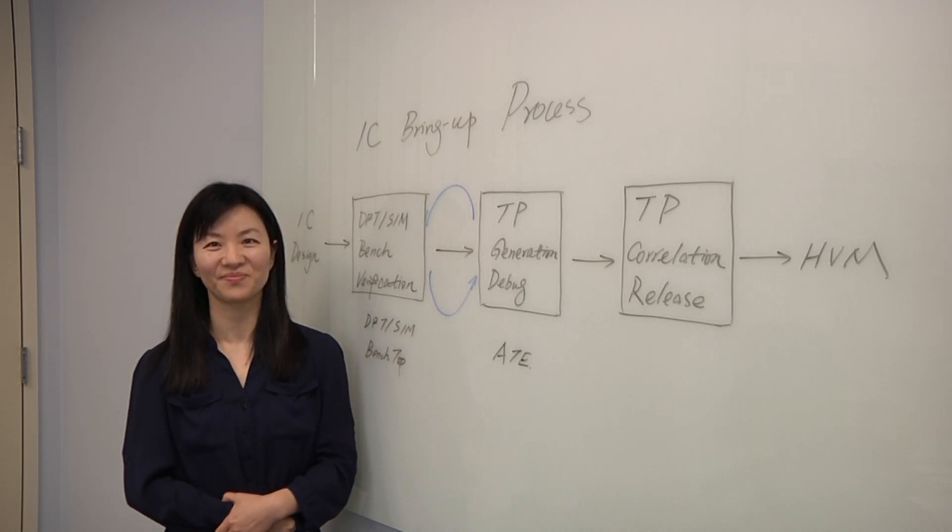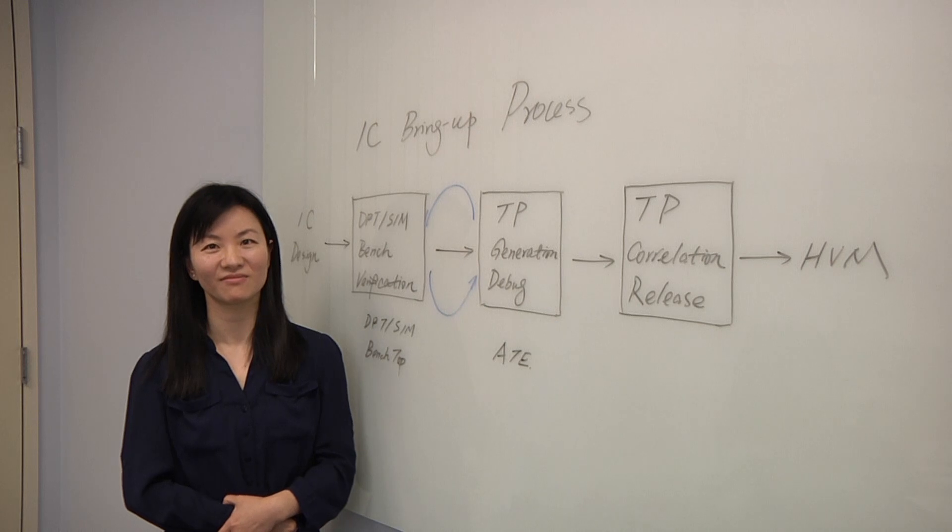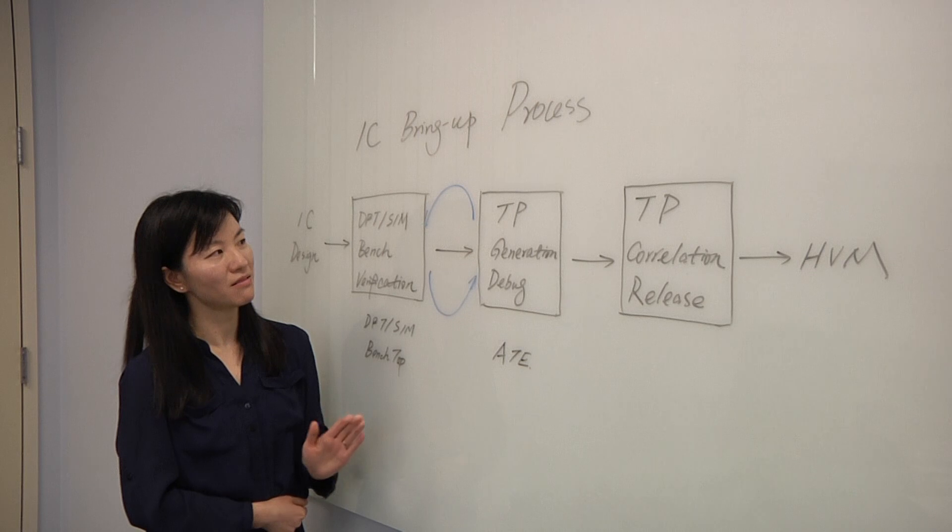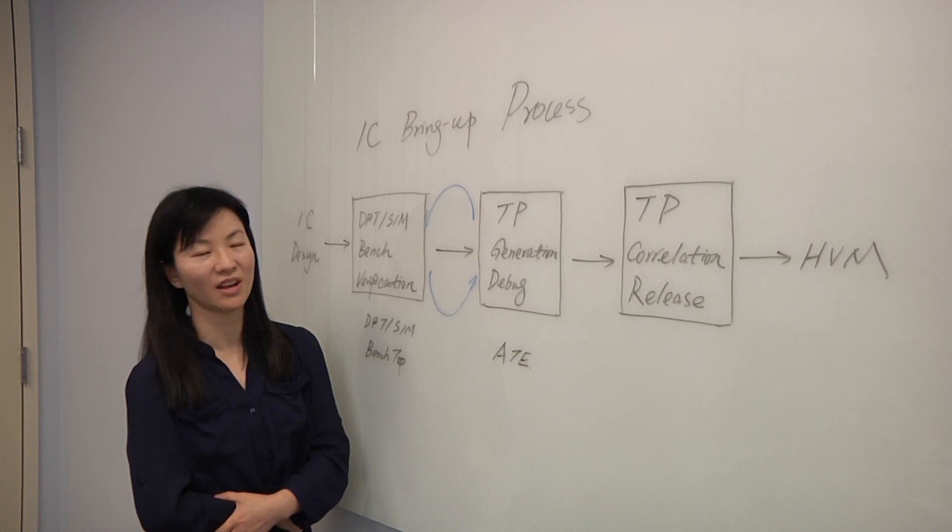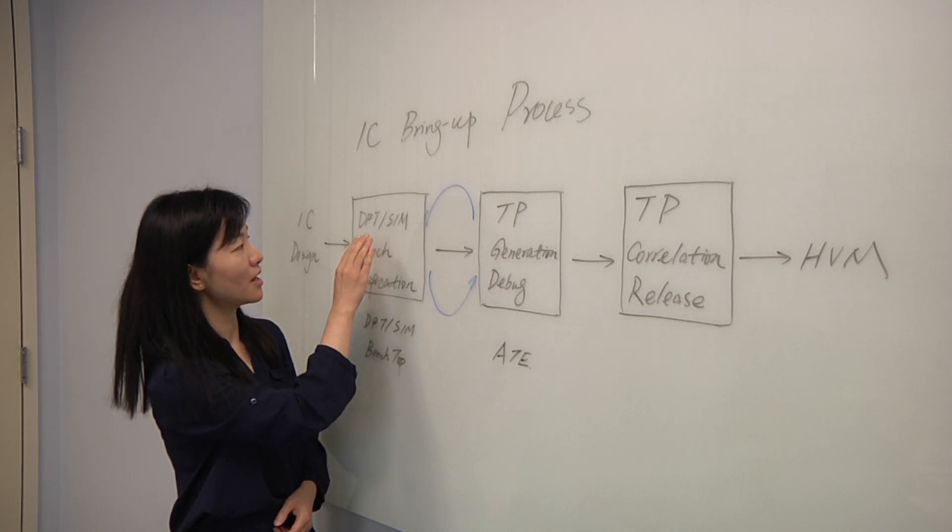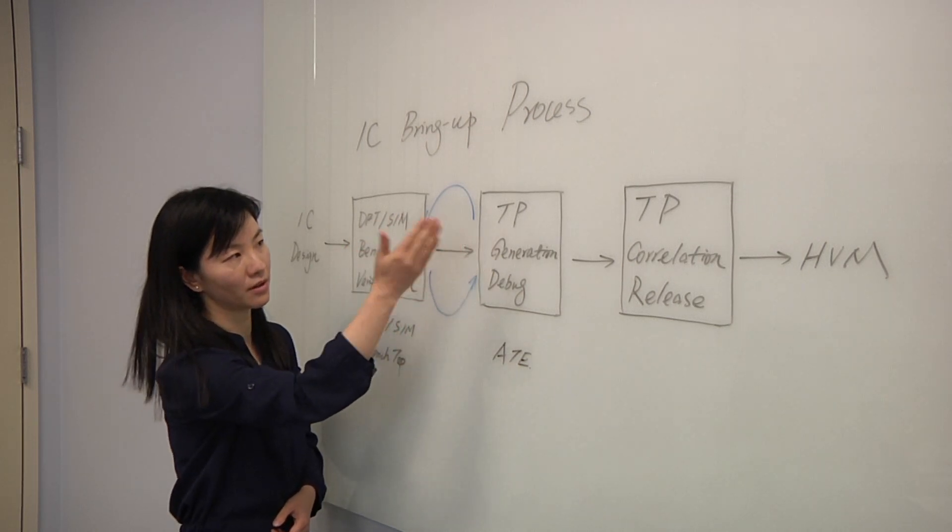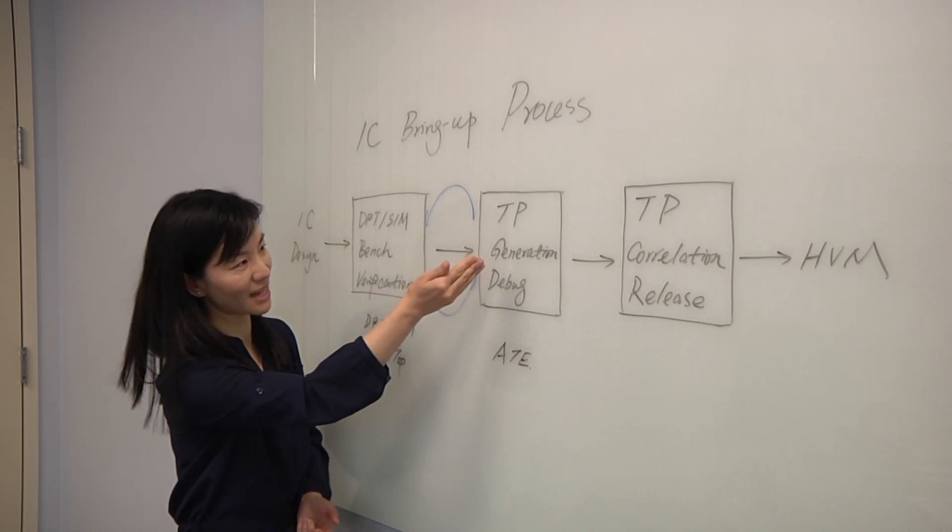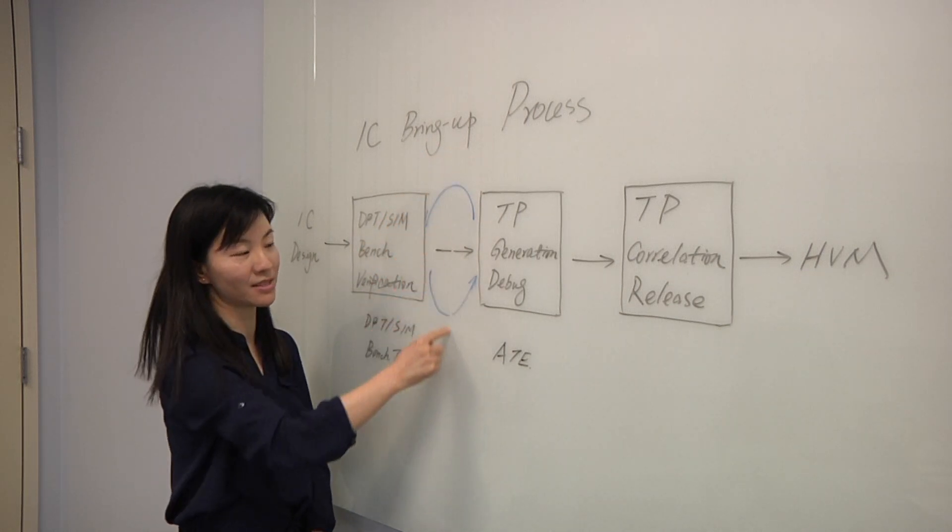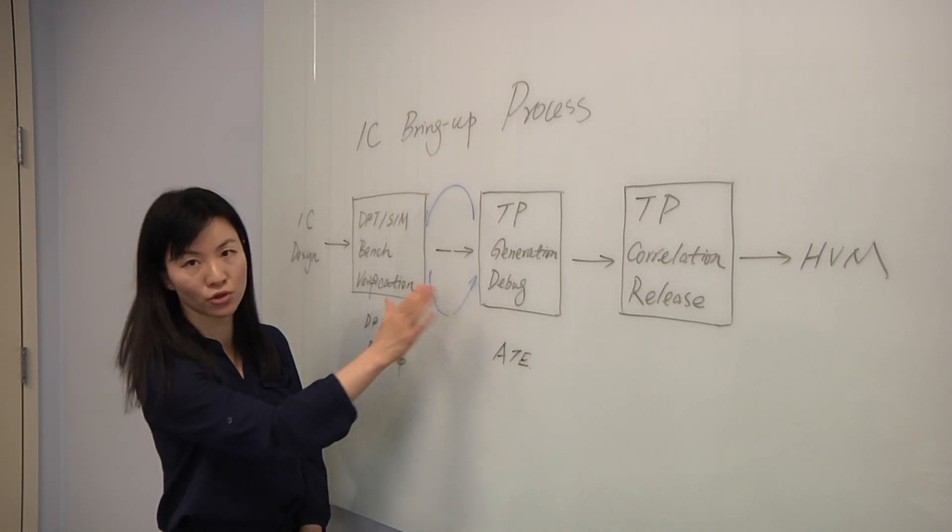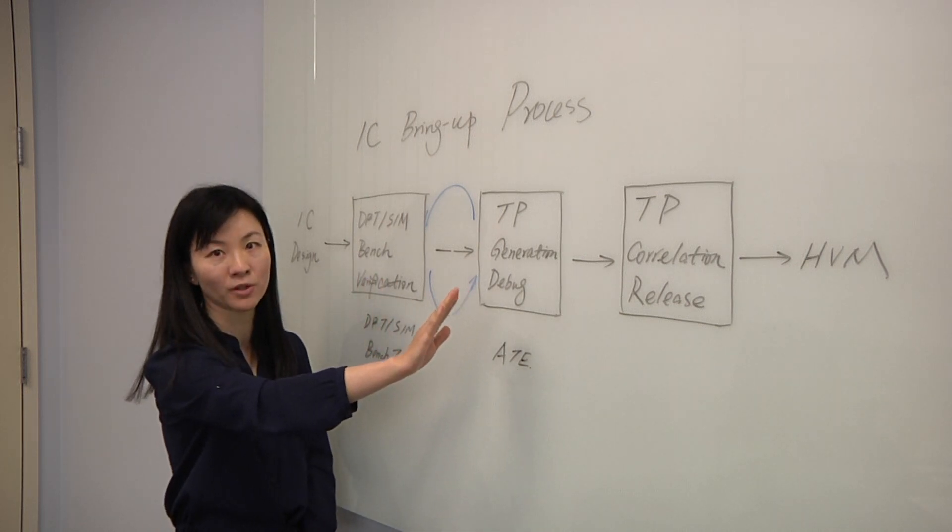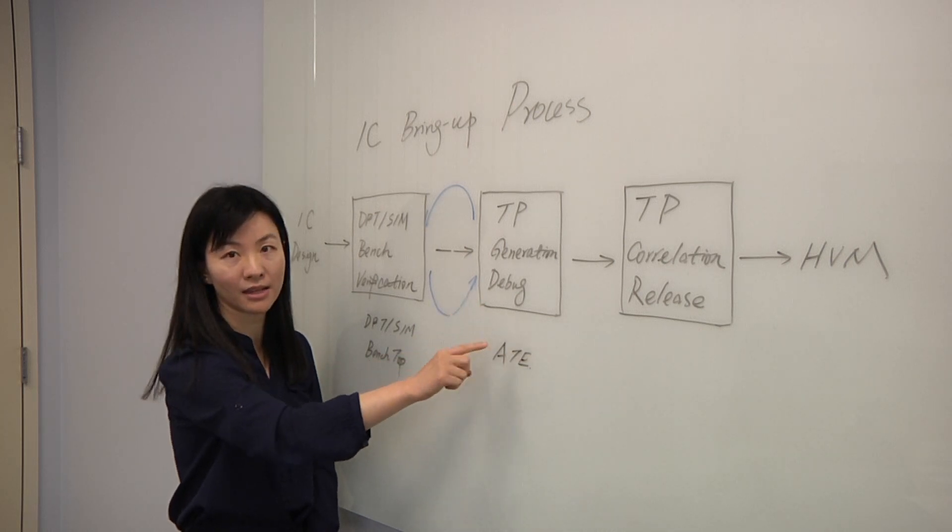Where do you typically run into problems on moving from one stage to the next? What's the big problem area? The one big problem here I want to state out today is between the DFT simulation or bench with the ATE, the first step of ATE to do the test program generation. Because there is a wall, like I said before, there is a wall between those two worlds. Before that is more the designers world, but after that is for the test engineering and is on the ATE.